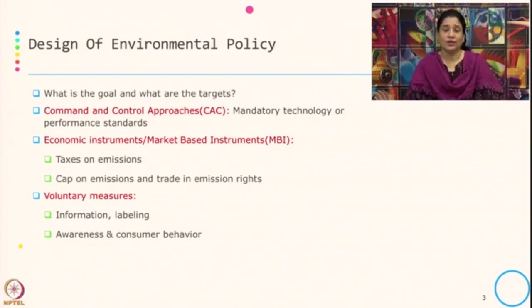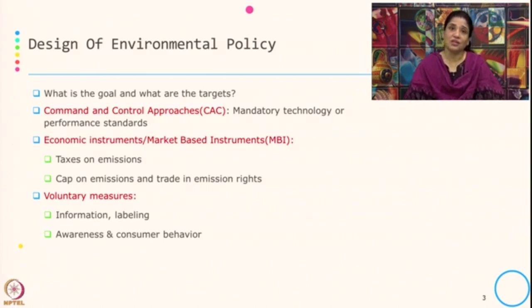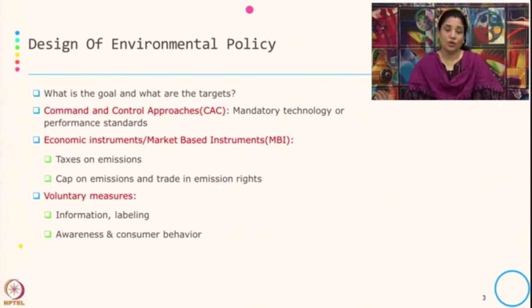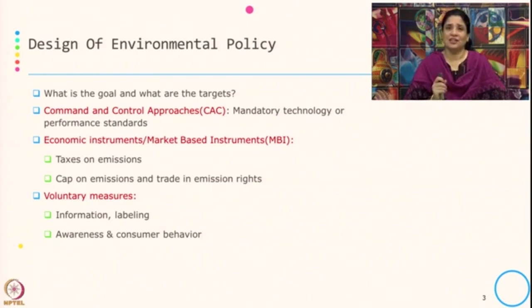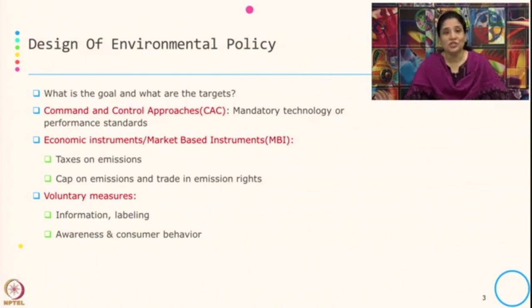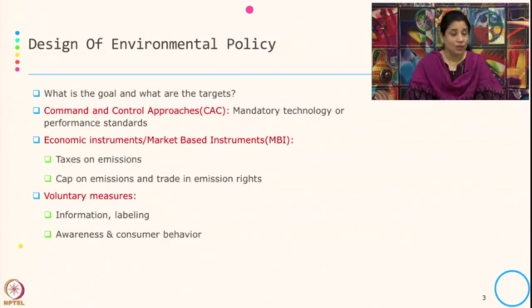Voluntary measures include information given on the product about environmental impact, different eco-labeling, which we have discussed in our strategy when discussing eco-branding, and also creating awareness and looking at consumer behavior. There are mostly three types of approaches: command and control, market based instrument, and voluntary measures — which include providing information, labeling, and also some compliance activities.